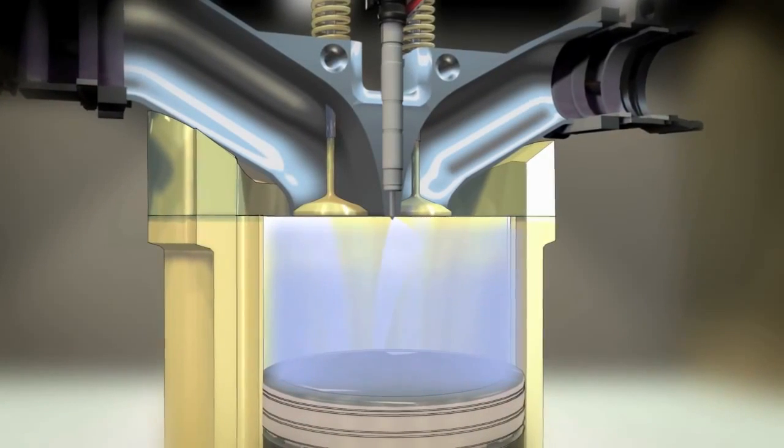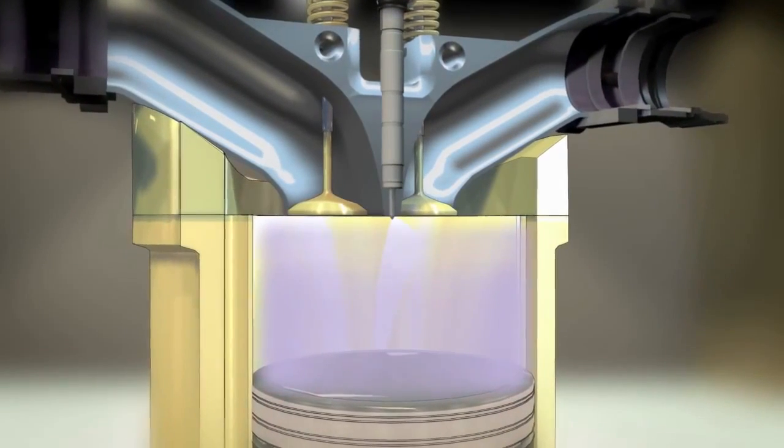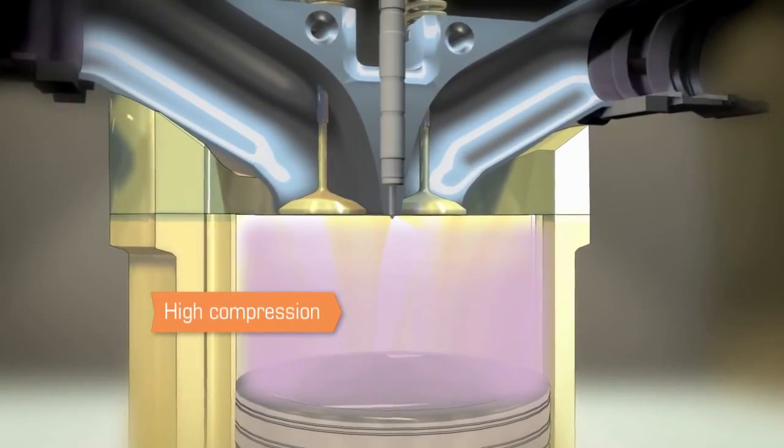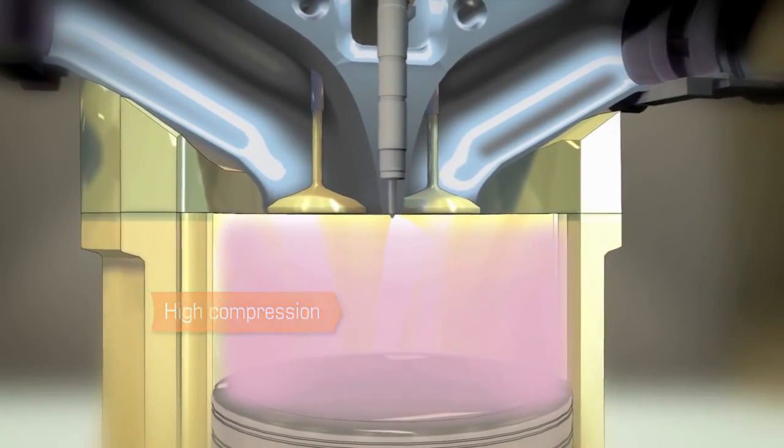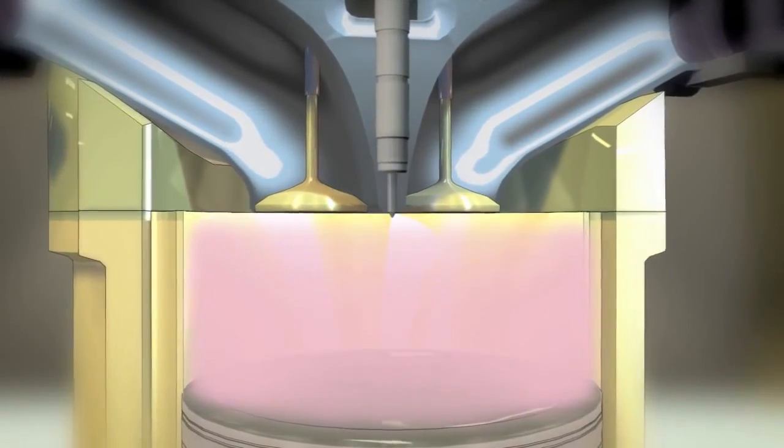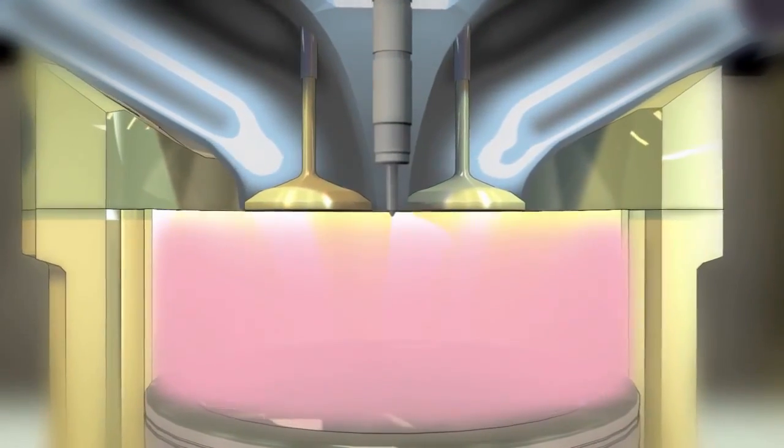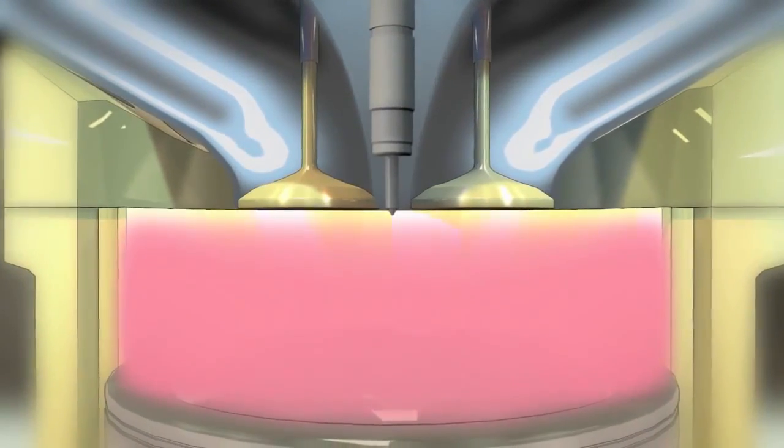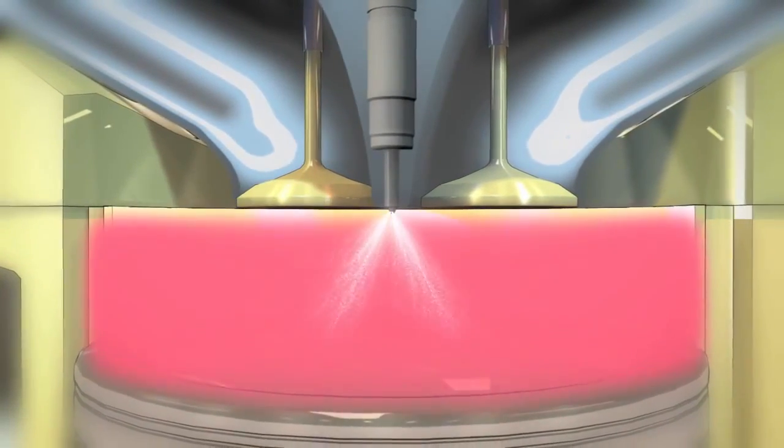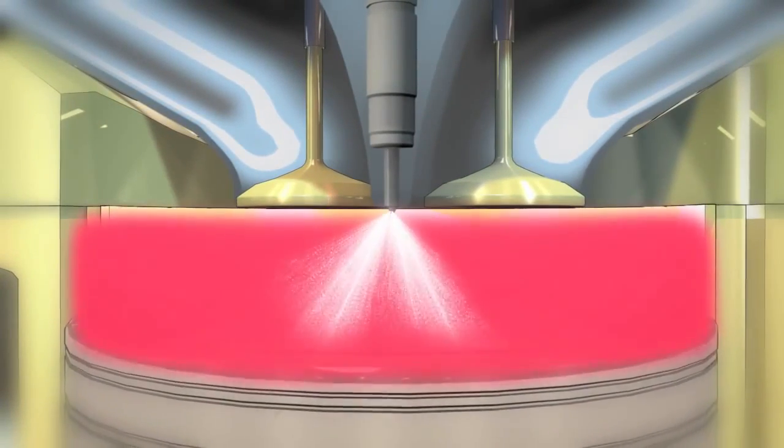As the piston rises, the air is compressed to much higher pressures than in gasoline engines, thanks to the higher compression ratio of the diesel engine. To properly time the start of combustion in a diesel engine, we rely on the injection of the fuel directly into the combustion chamber that now already contains hot, high pressure air.